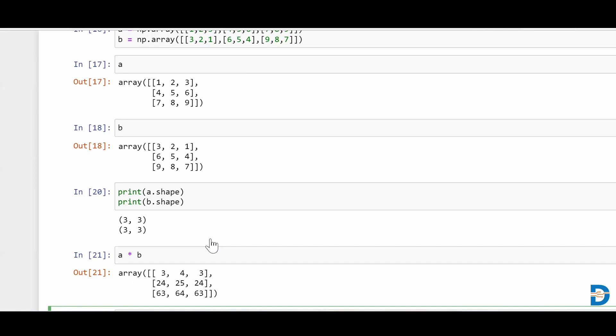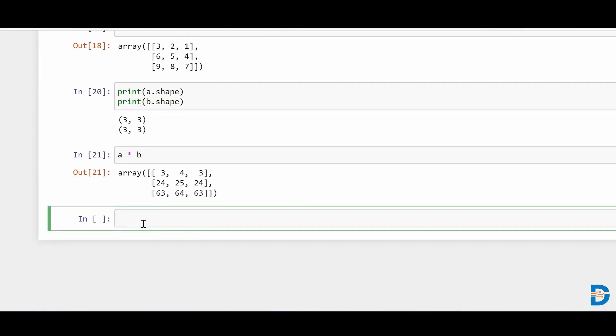But when we talk about matrix multiplication, it simply means that we have to use a dot product. So what is a dot product? So a dot product, let's say, we have a matrix over here like this and we have a matrix like this over here as well.